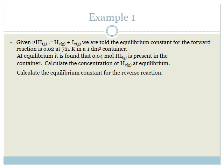Let's look at our first example. We are given: 2HI goes to H₂ plus I₂, and we are told the equilibrium constant for the forward reaction is 0.02 at 725 Kelvin in a 1 decimetre cube container. At equilibrium it is found that 0.04 moles of hydrogen iodide is present in the container. Calculate the concentration of hydrogen at equilibrium, and then calculate the equilibrium constant of the reverse reaction.